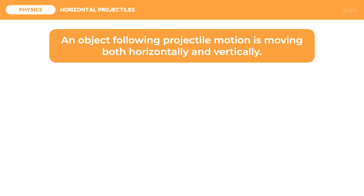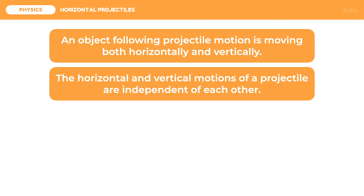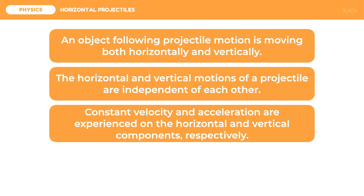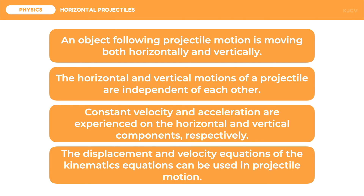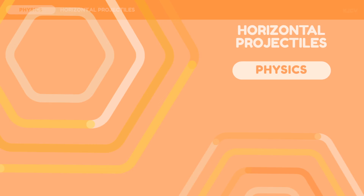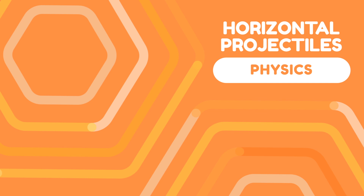To summarize this lesson, let us go back to the following key points. An object following projectile motion is moving both horizontally and vertically. The horizontal and vertical motions of a projectile are independent of each other. Constant velocity and acceleration are experienced on the horizontal and vertical components respectively. And lastly, the displacement and velocity equations of the kinematic equations can be used in projectile motion. That ends our discussion on horizontal projectiles. We'll see you next time.